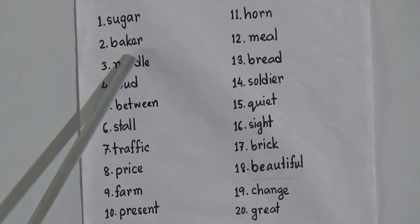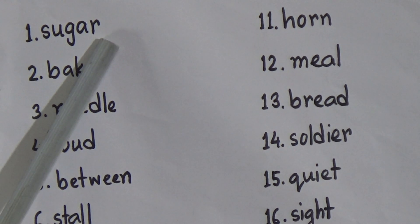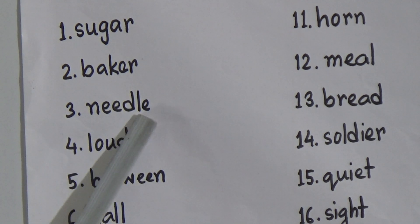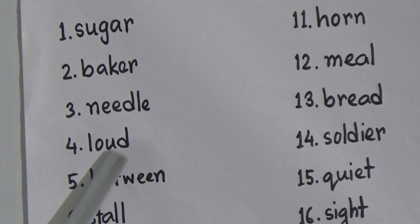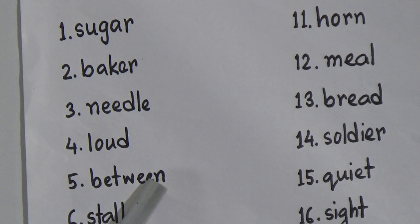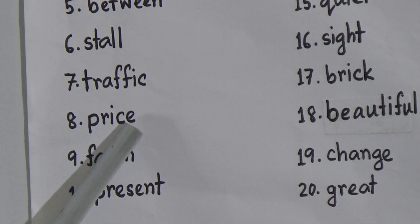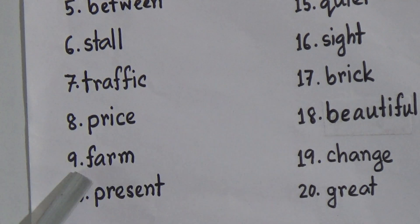Now all of you listen to me carefully. Number 1, sugar. Number 2, baker. Number 3, needle. Number 4, loud. Number 5, between. Number 6, stall. Number 7, traffic. Number 8, price. Number 9, farm. Number 10, present.